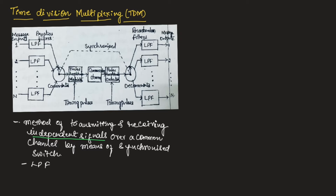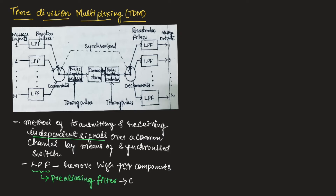The low pass filters are used to remove high frequency components present in the message signal. These low pass filters are also known as pre-aliasing filters. The output of the pre-aliasing filter is fed to the commutator.